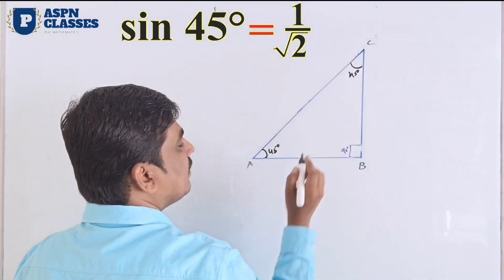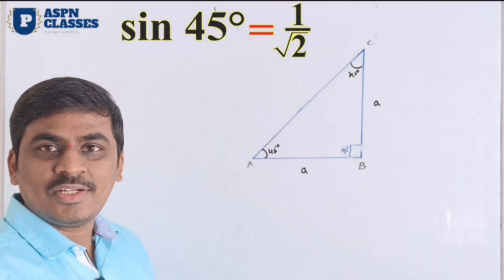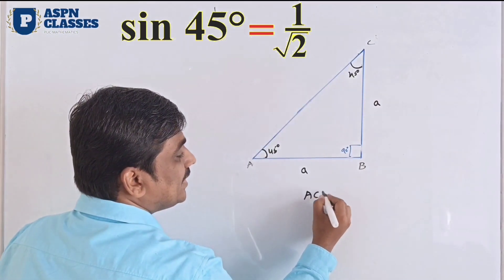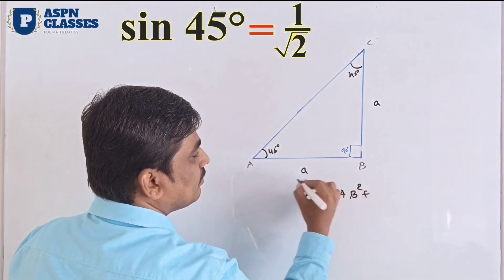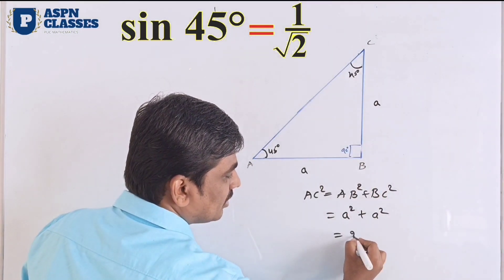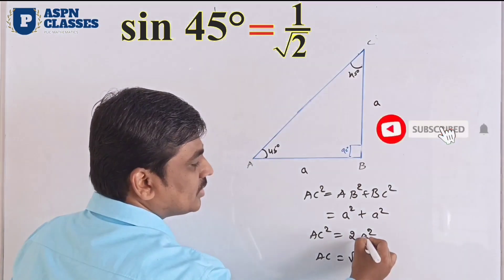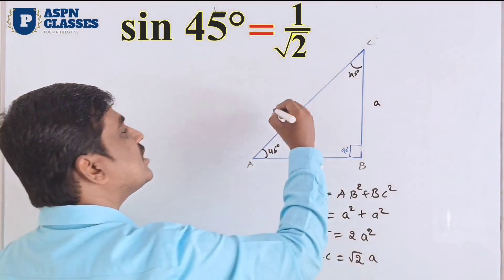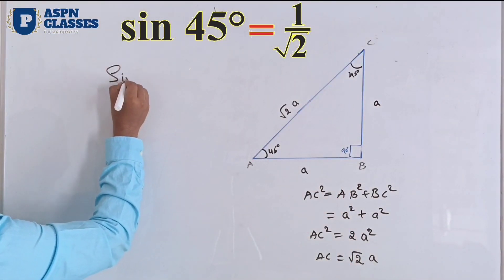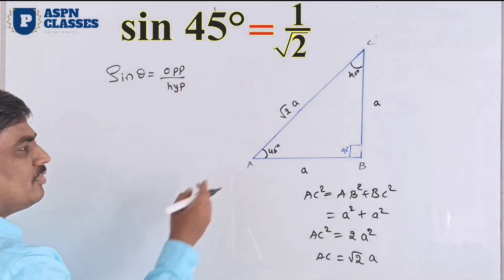If I have two sides equal to a, I will denote them as a. By Pythagoras: AC² equals AB² plus BC², so AC² equals a² plus a² equals 2a², therefore AC equals √2 times a. We have already discussed the formula: sin(θ) equals opposite divided by hypotenuse.